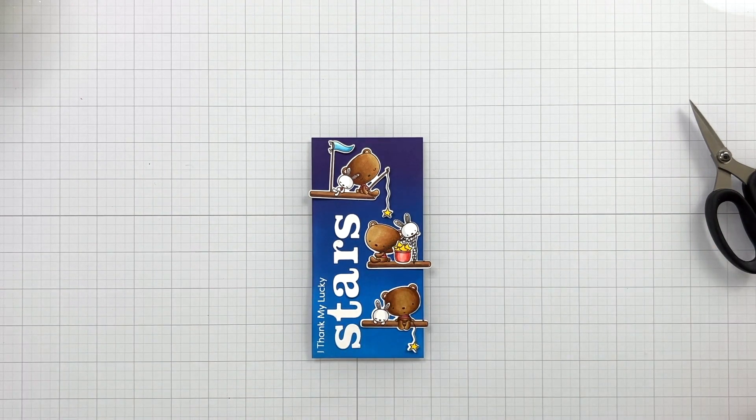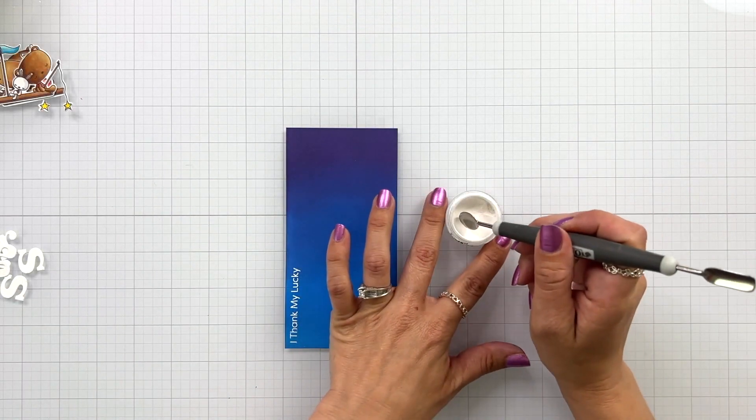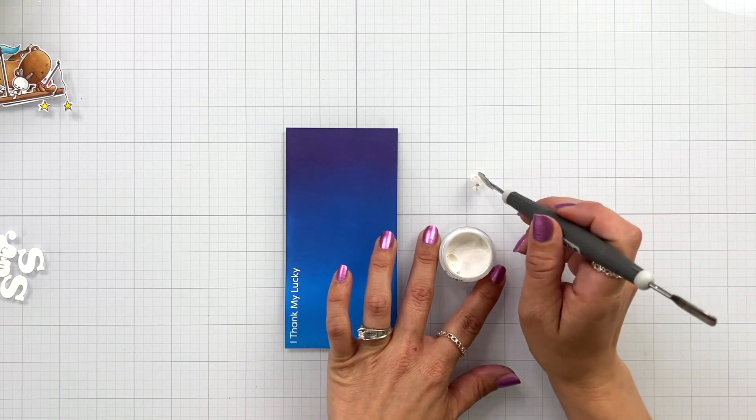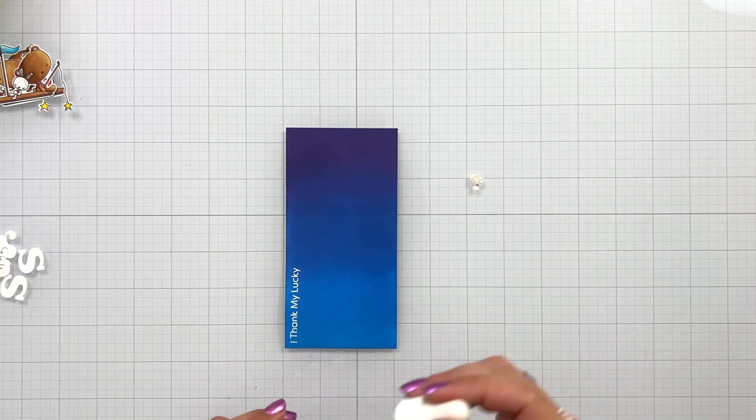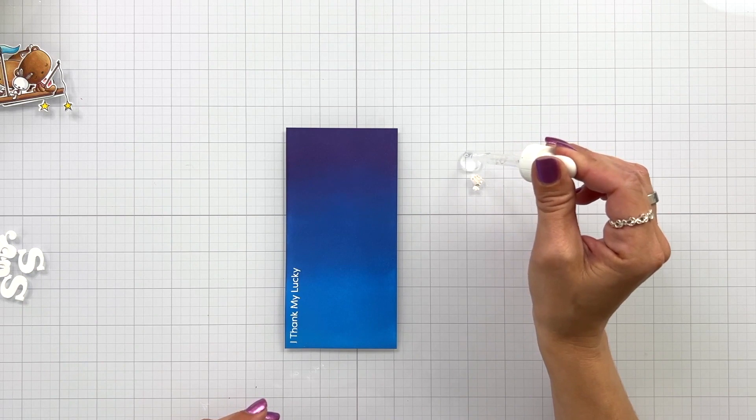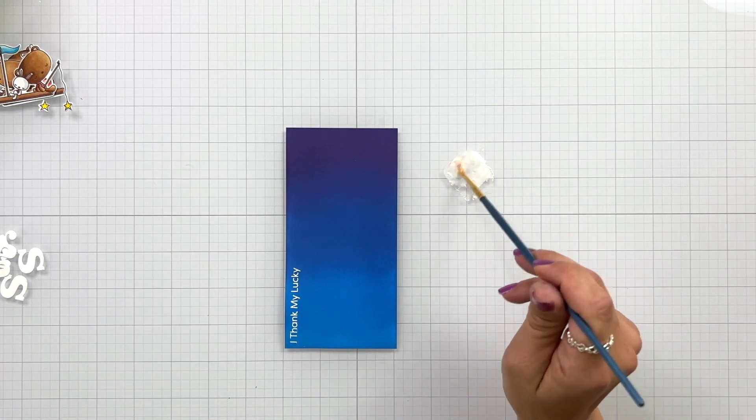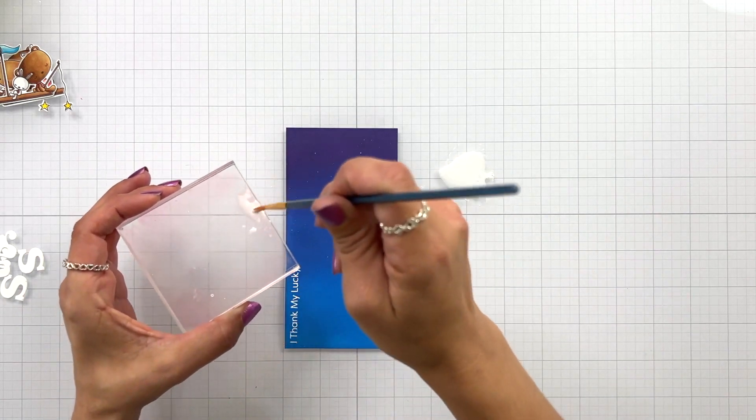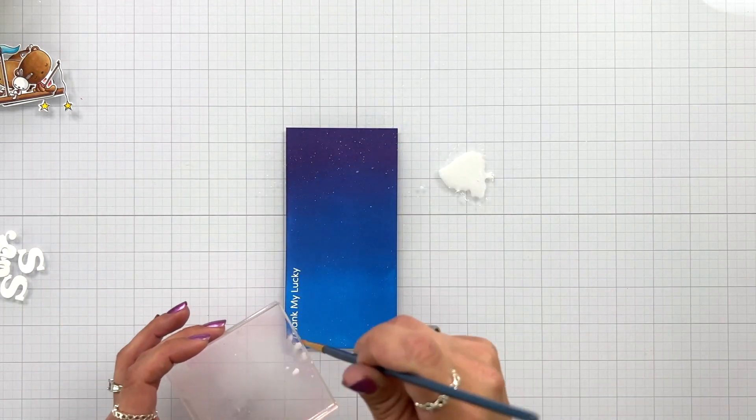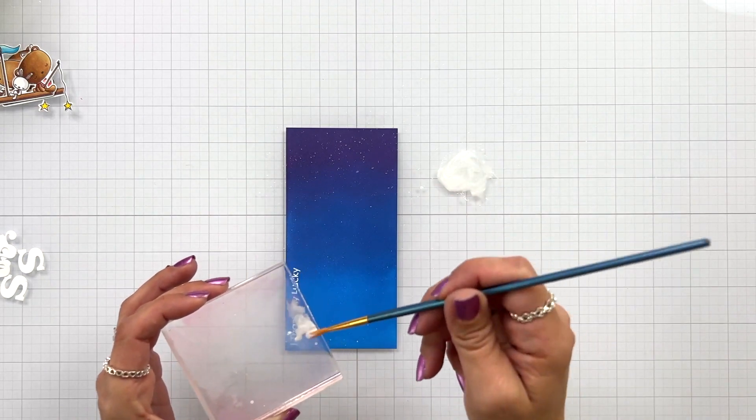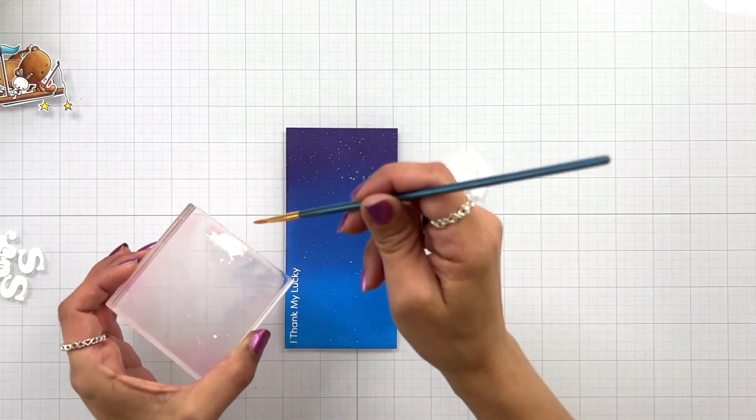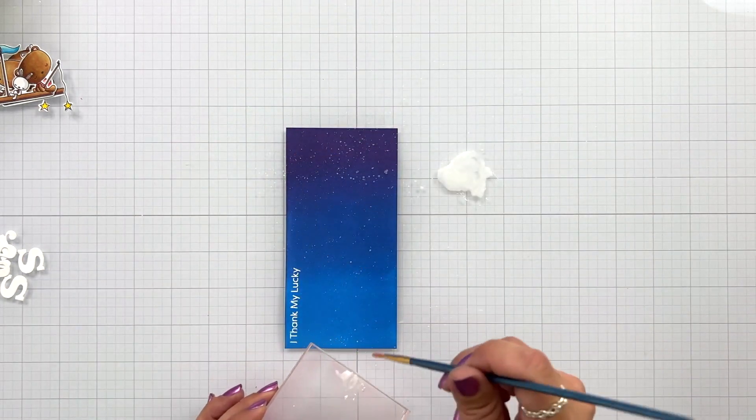Now that I know where everything is going to go I'm going to add some stars to my background. To do this there's lots of different things you could use. I'm going to take some white perfect pearls, scooping some out on my surface. I'm going to add a couple drops of water and then mix that together with a paintbrush. I like to add this mixture to an acrylic block and then flick off of the block, and this will give me some really fine stars.